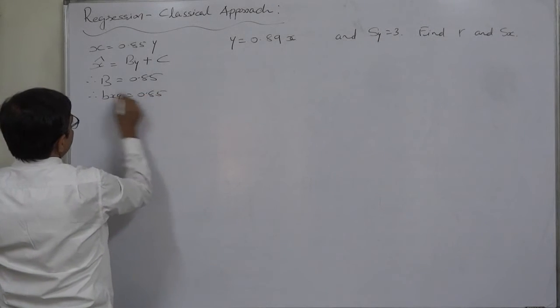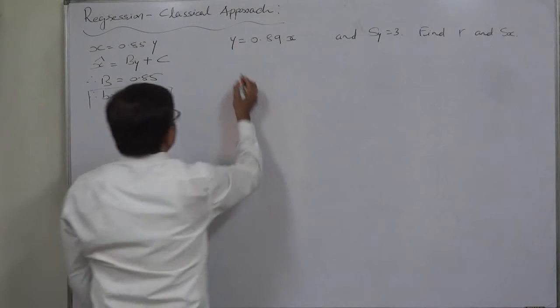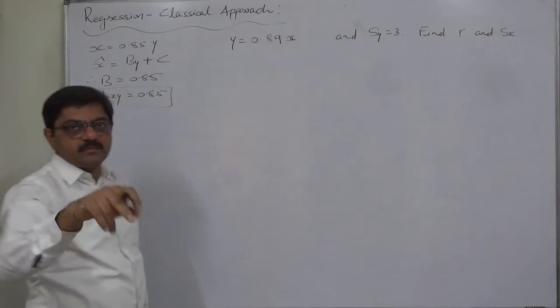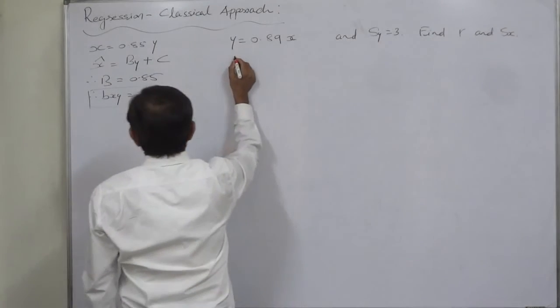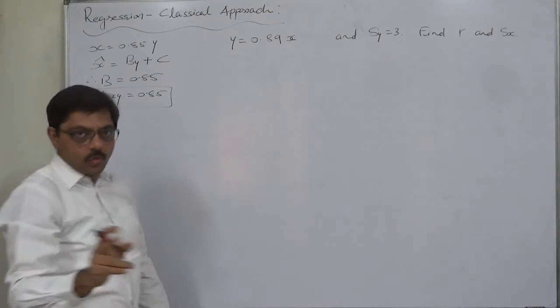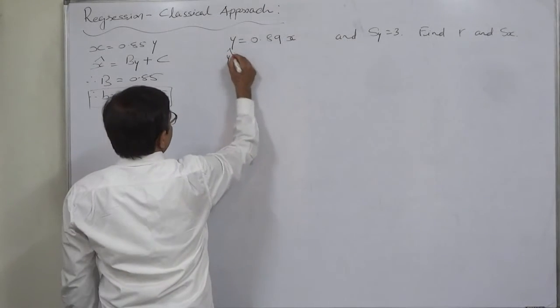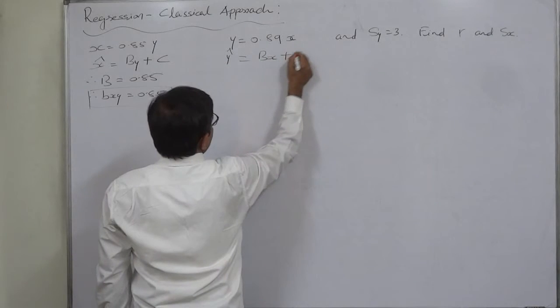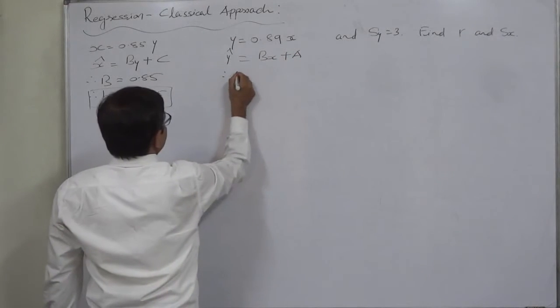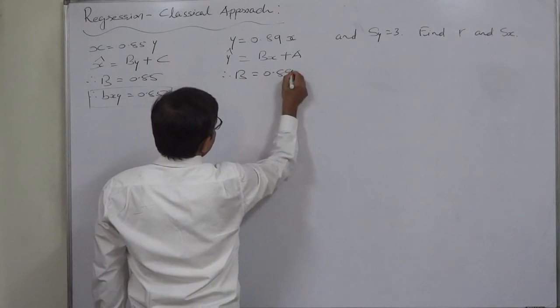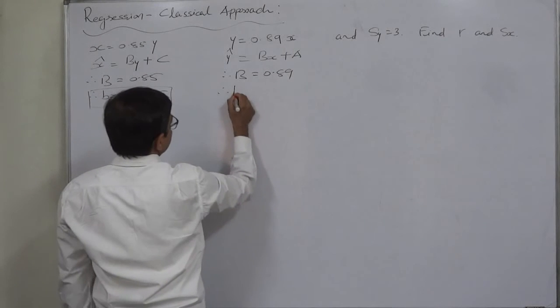In this case, y is subject of formula or subject of equation, therefore this is the line of regression of y on x. Its standard form is y cap equals to bx plus a or a plus bx, therefore b is 0.89 here, and in this equation b stands for byx.